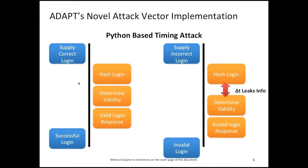The second pillar is the custom attack vector module. As an example, we found a Python-based timing attack. On the left-hand side — everything in blue is client side, everything in orange is server side. When correct login details are supplied, the server hashes it, determines validity, and returns a valid login response. With incorrect details, the server performs the same logic but returns an invalid response. However, the time the server takes to hash and validate differs between correct and incorrect logins — an information leak we can exploit to enumerate valid and invalid credentials. This is not yet covered by the OWASP testing guide, but we have found it in commercial applications.